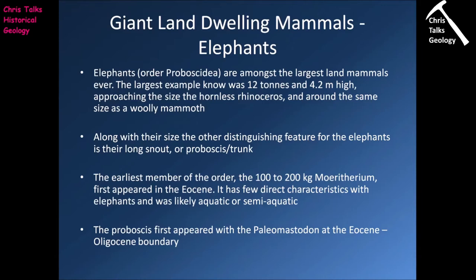The elephants are part of the order Proboscidia and they are amongst the largest land mammals ever. The largest example of a modern elephant was 12 tons in weight and about 4.2 meters high at the shoulder, approaching the size of the hornless rhinoceros we saw a couple of slides ago, and about the same size as a woolly mammoth. Along with their size, the other distinguishing features elephants possess are their long snout — sometimes referred to as the proboscis or trunk — and of course their tusks.